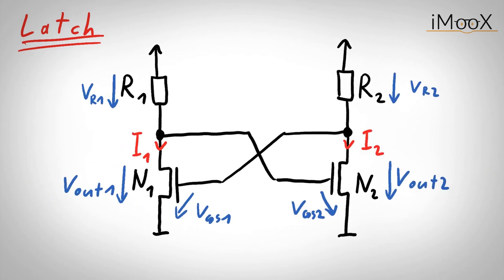However, now we can examine what happens if one voltage changes slightly. Let us assume that V_out1 increases, then the gate source voltage of transistor 2 increases too, leading to a higher current I2 and to a higher voltage of resistor R2. As the supply voltage is constant, V_out2 decreases, which leads to a decrease in gate source voltage of transistor 1, and therefore to a lower current I1 and a lower voltage of resistor R1. This again leads to an increase of voltage V_out1.